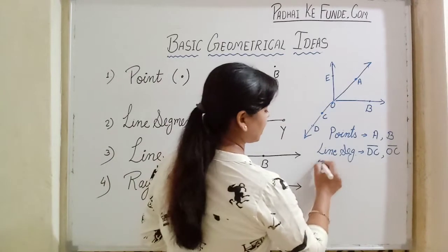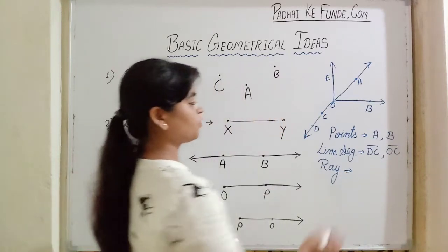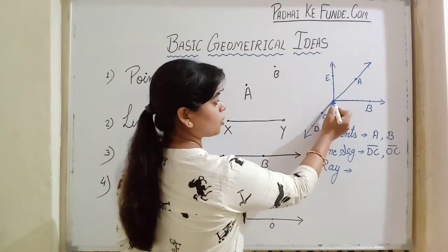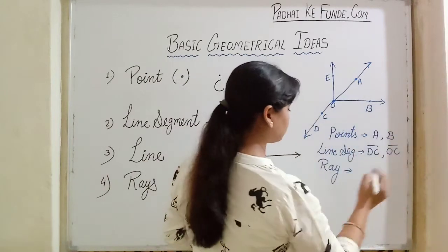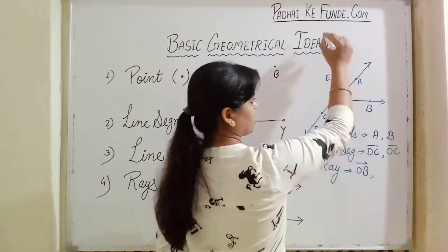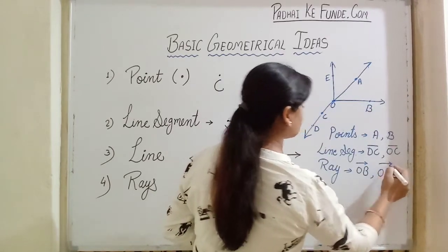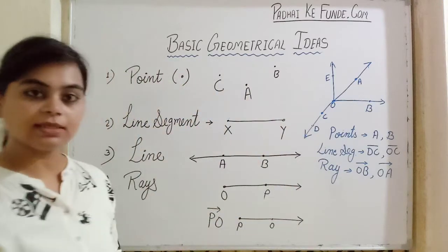Also, if we have to name any two rays here, we have C, O, B - O has the starting point but from B it is moving further. So we have ray OB and we have ray OE, OA and so on. And this is the manner to represent them.